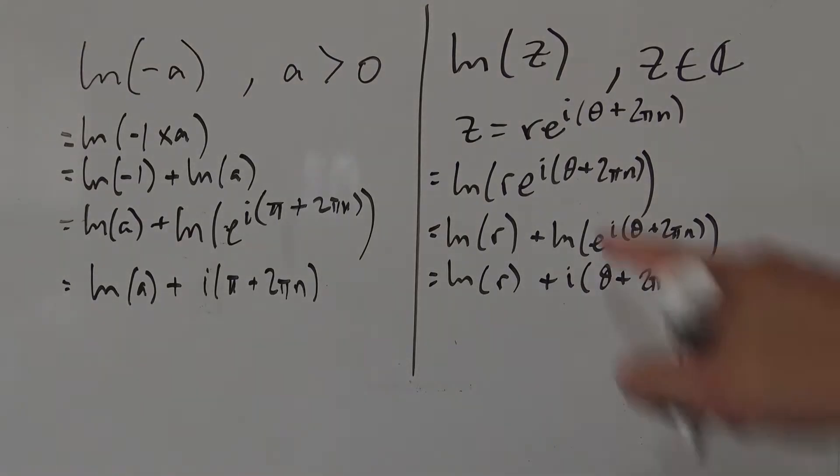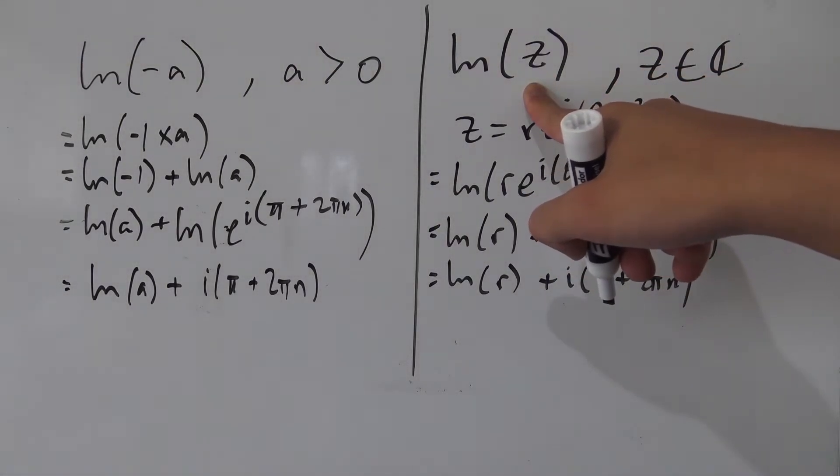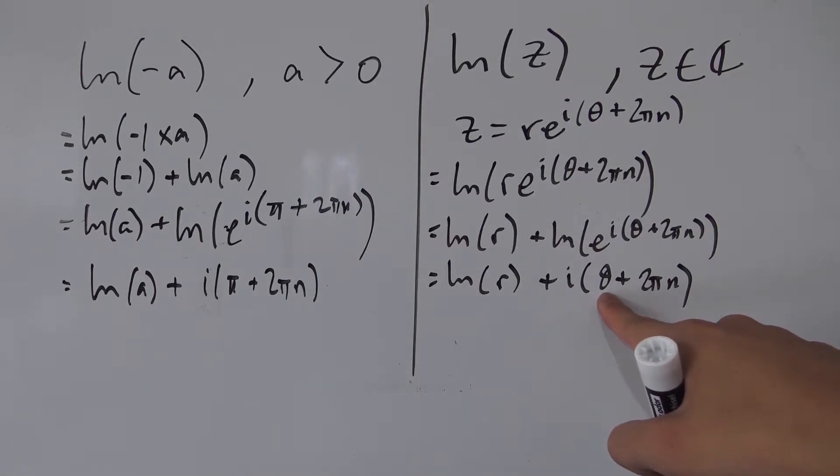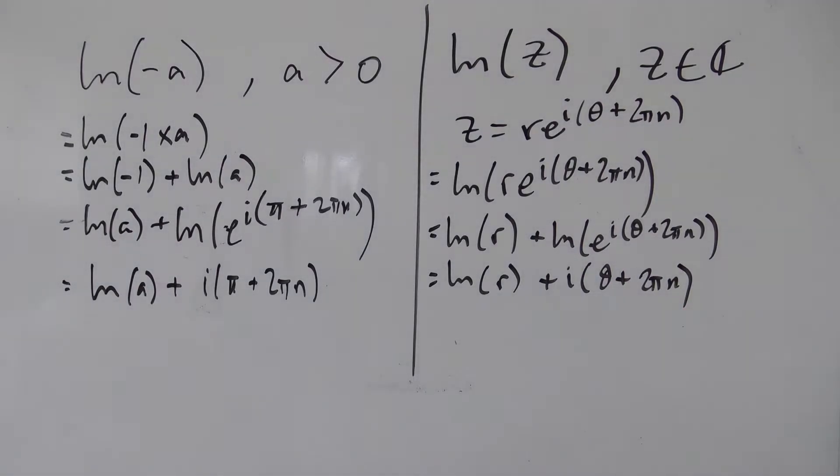So we have natural log of r plus i times theta plus 2 pi n. So there we go. So the natural log of some complex number is just the natural log of its modulus plus i times its angle that it makes with the real axis plus this extra 2 pi n here.